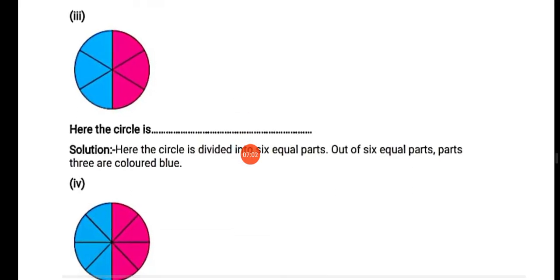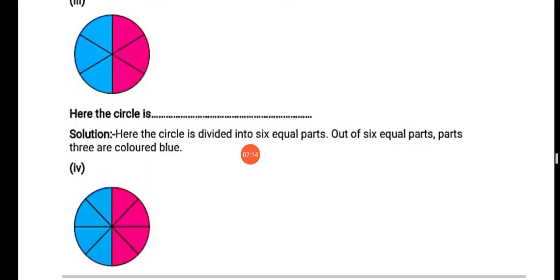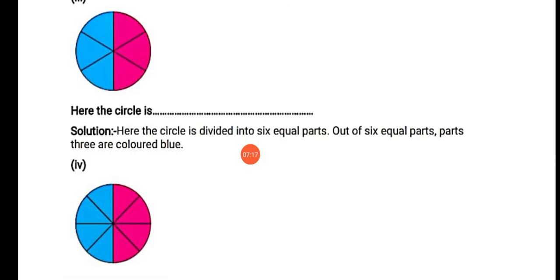Now we'll move on to number 3. Here the circle is divided into dash equal parts — number 3 mein hame circle diya hai. Hame batana hai ki yeh circle ke kitnay equal parts hai aur total kitnay parts mein se kitnay parts mein blue color kiya gaya hai. So pehle haemare circle mein total kitnay parts hai — 6. Here the circle is divided into 6 equal parts. Out of 6 equal parts, 3 parts are colored blue.